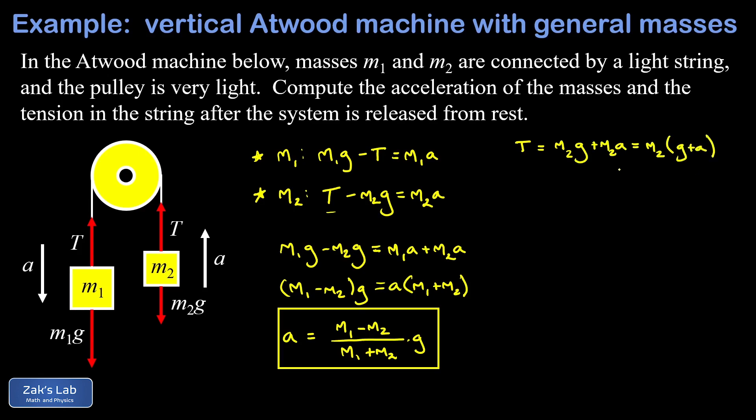We have this big fraction for the acceleration: m1 minus m2 divided by m1 plus m2 times g. Of course we can pull a g out of that, so now I have an m2g times one plus m1 minus m2 over m1 plus m2.